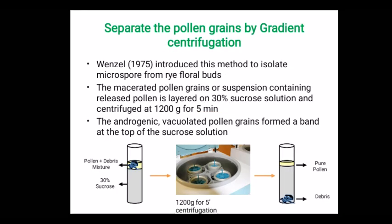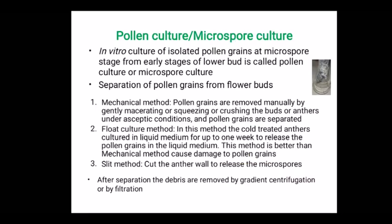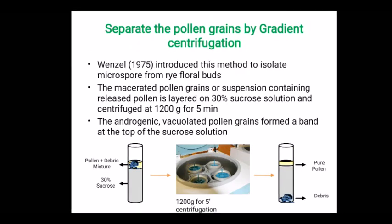Now we will see pollen grain separation by gradient centrifugation. Scientist Wenzel and his team introduced this method to isolate microspores from the rye plant. The flower buds are macerated, and released pollens from the suspension are layered over a 30 percent sucrose solution and centrifuged at 1200 g force for five minutes. At the end, the less dense pollen grains stay at the top layer and the heavy dense debris settle to the bottom, allowing easy separation of pure pollen grains.